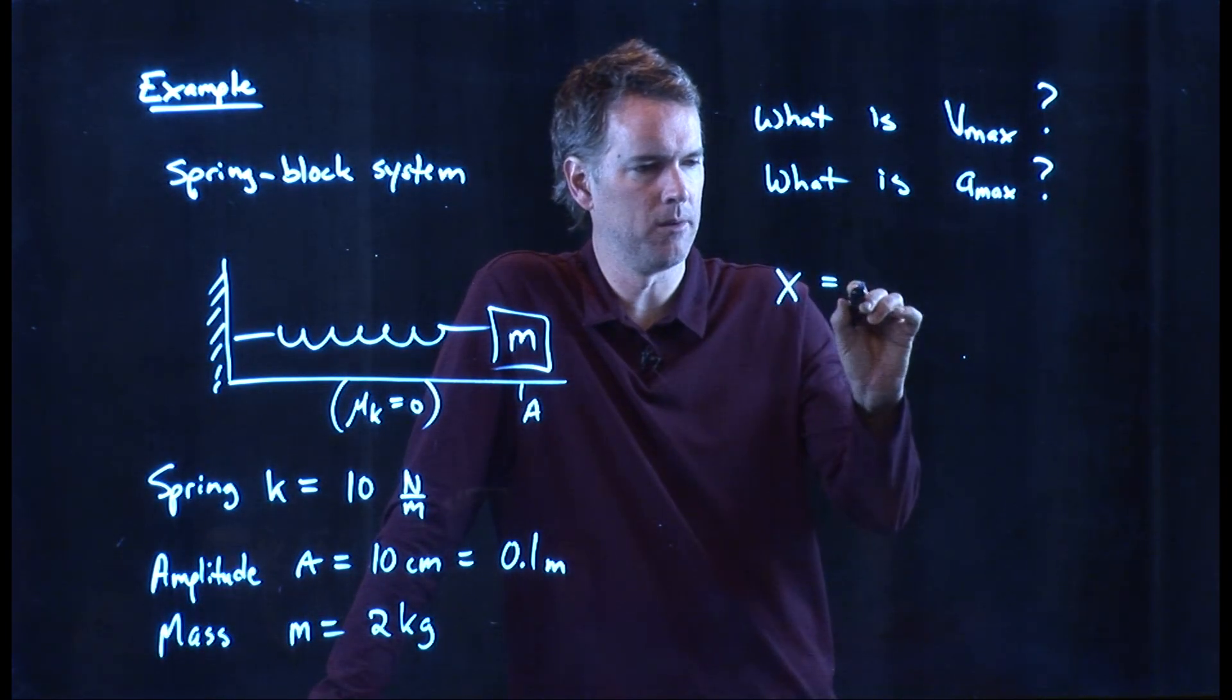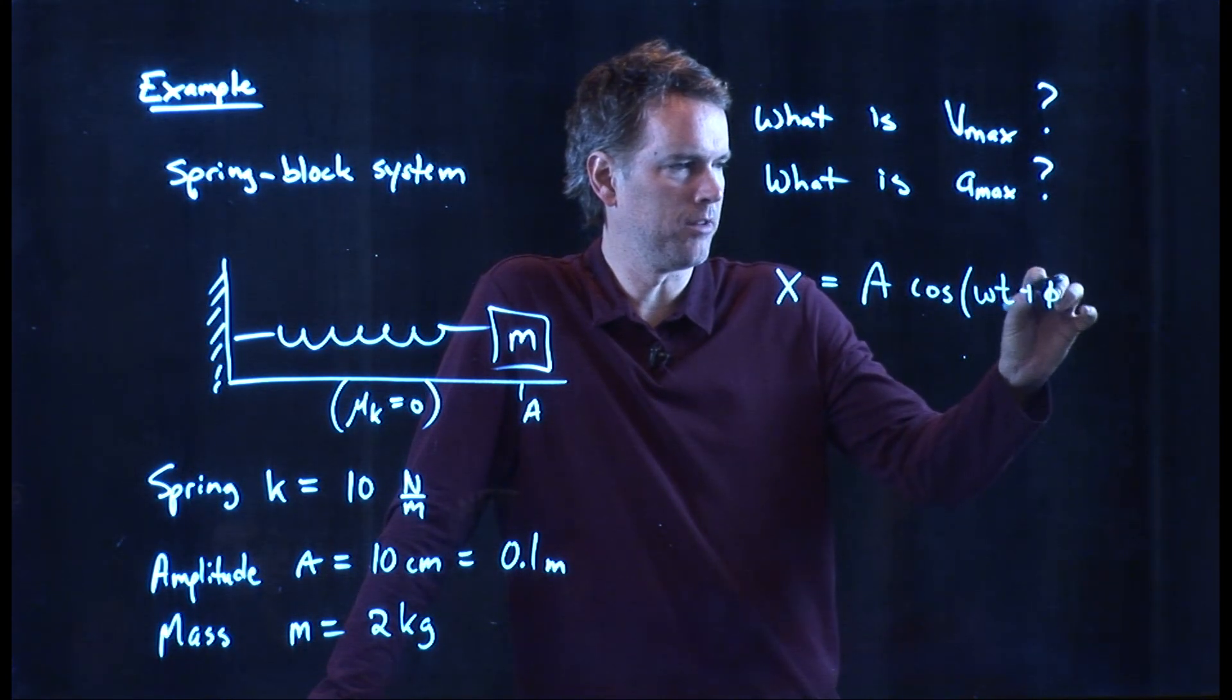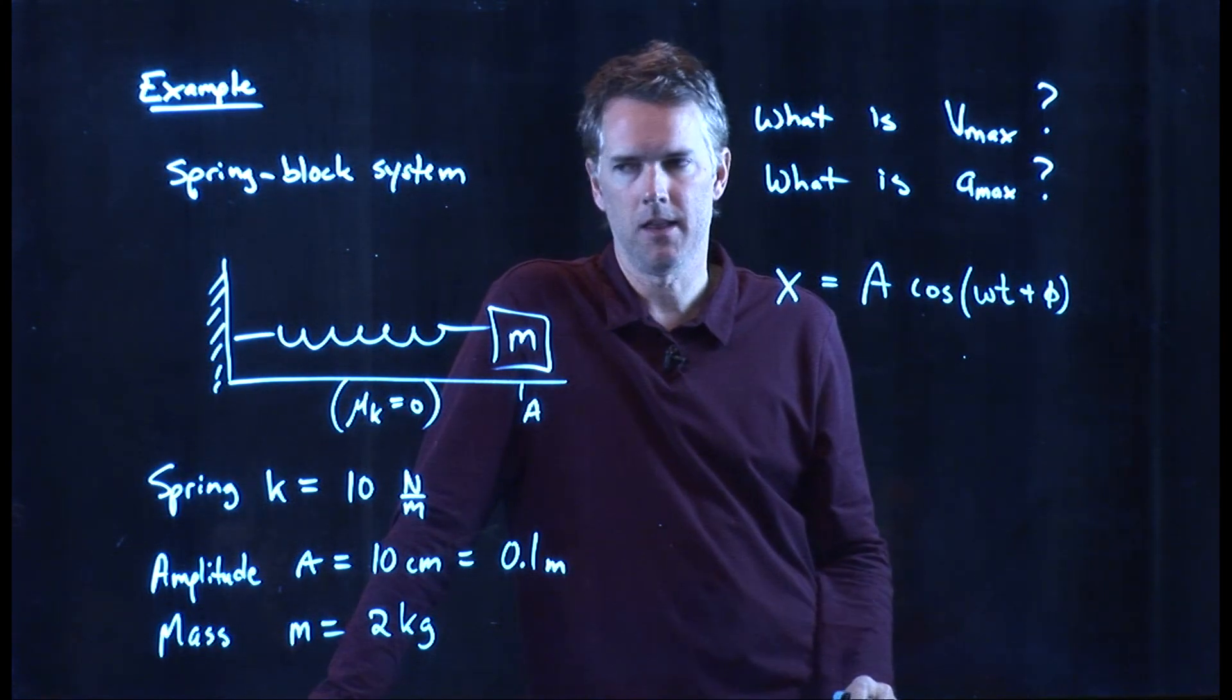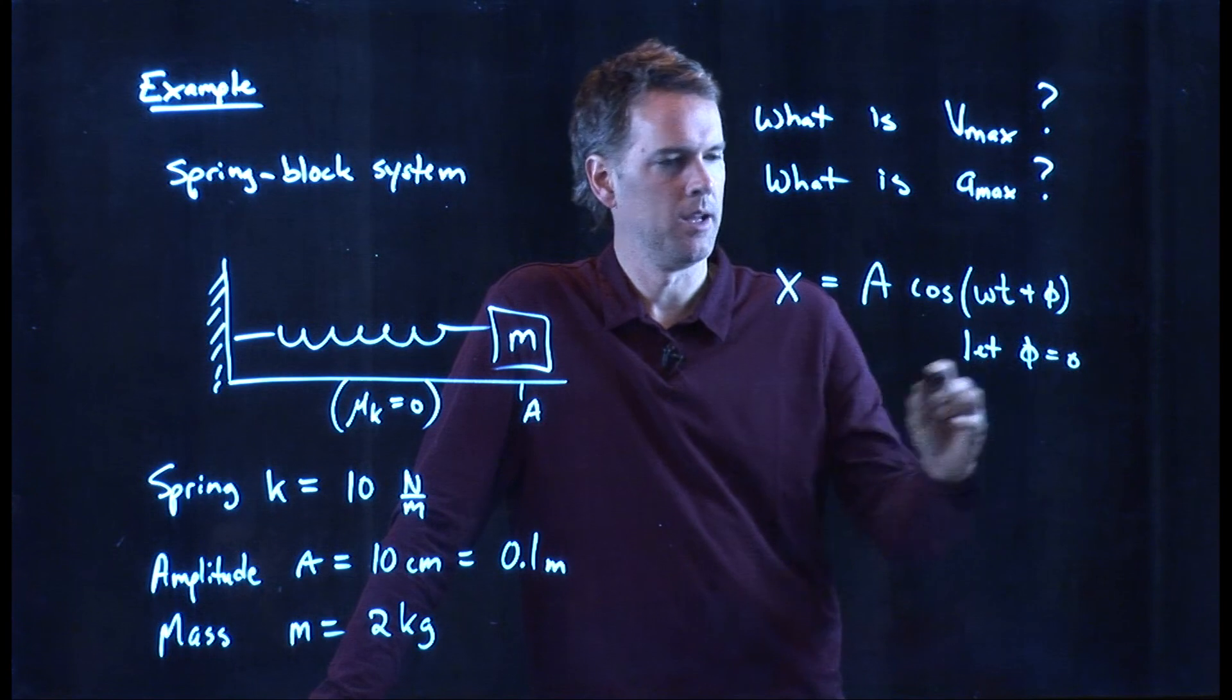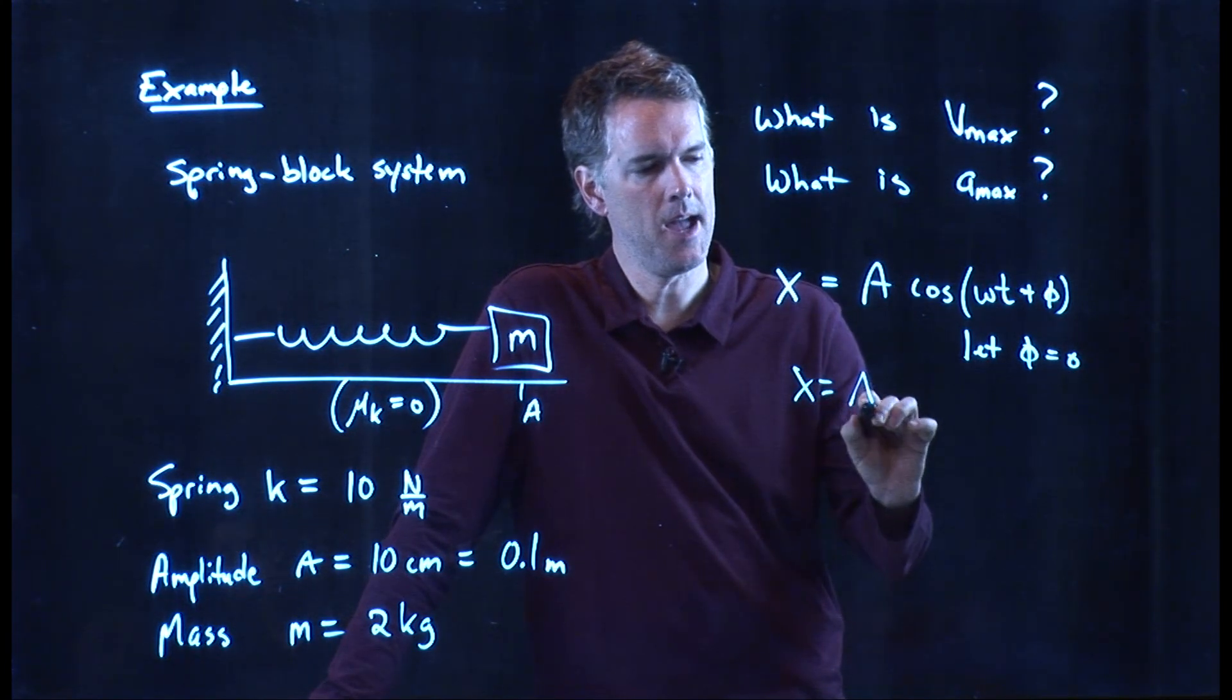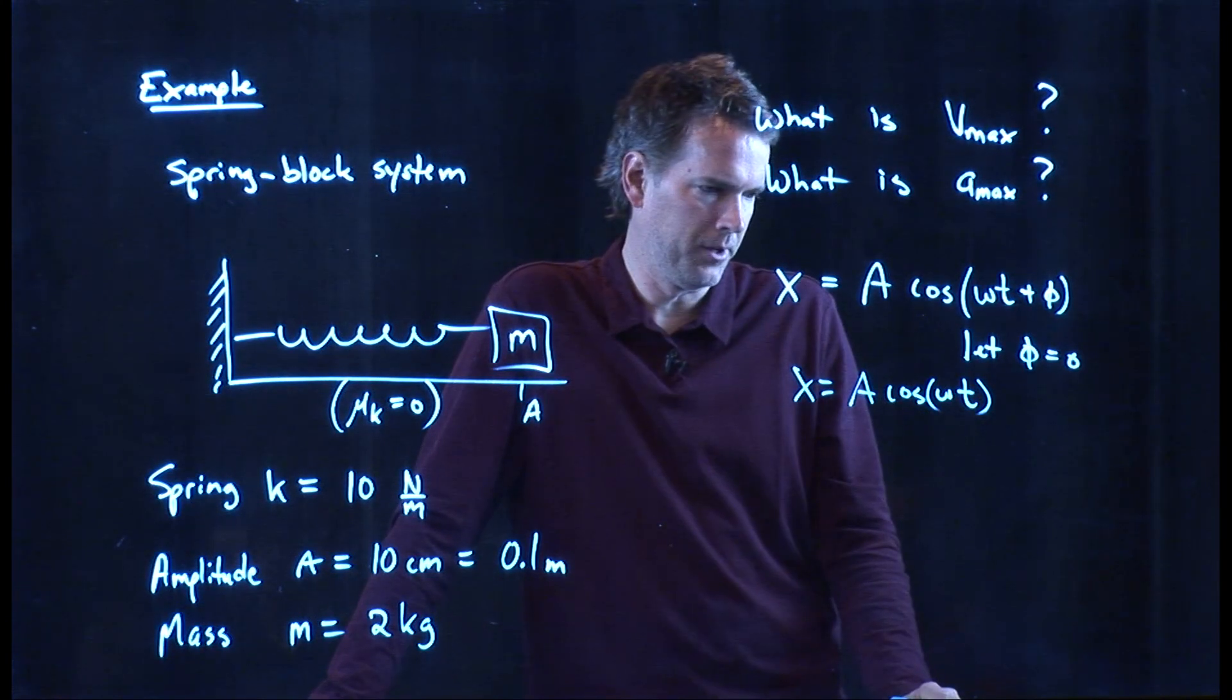The last one we looked at was this. x equals A cosine omega t plus phi. And let's say that we're just going to let phi equal zero. And so this just becomes A cosine omega t. That looks pretty good.